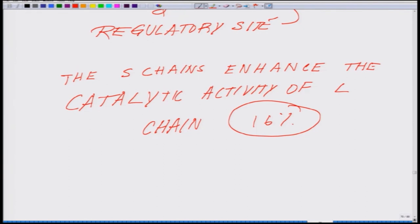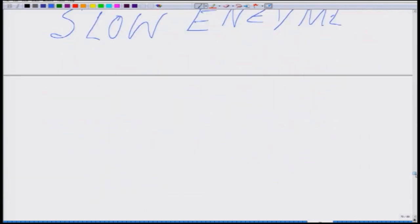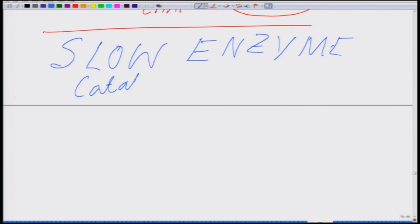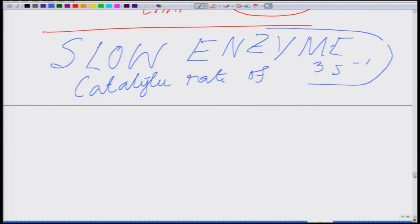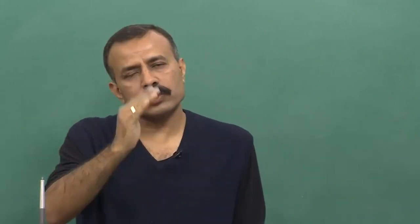Despite being so abundant, Rubisco is called a very slow enzyme because of its catalytic rate. It has a catalytic rate of only 3 per second, which is amazingly slow. It is very interesting to note that, though Rubisco helps in attaching one carbon dioxide to a 5-carbon ring, it is very paradoxical that Rubisco itself needs a carbon dioxide molecule to get activated.